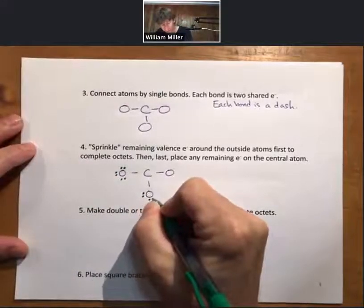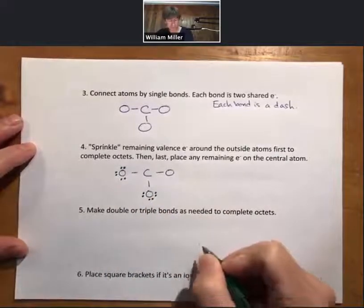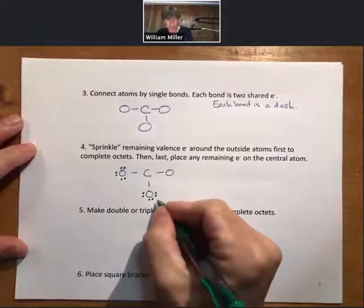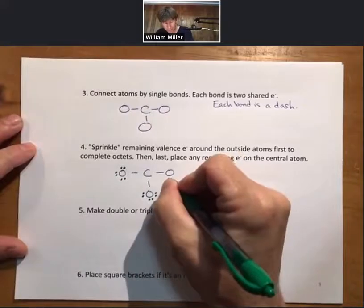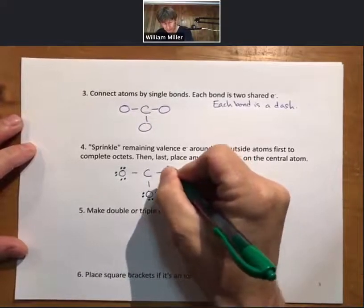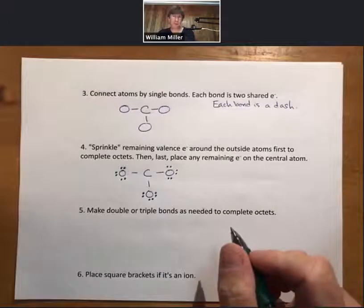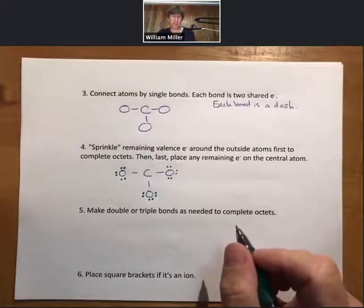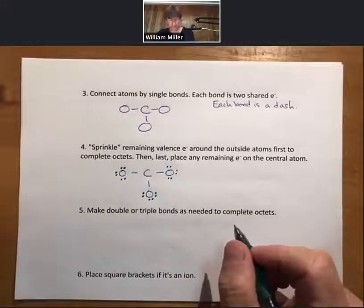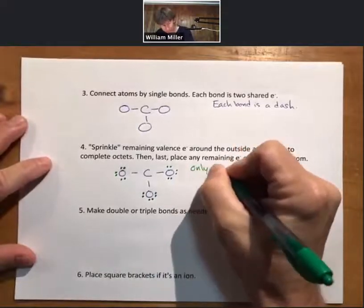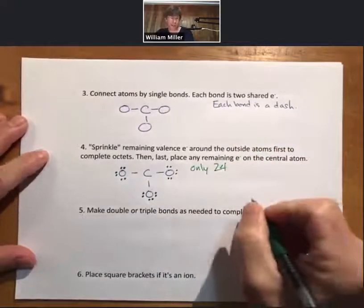Fourteen, sixteen, eighteen. Now we have an octet down for this oxygen. Twenty, twenty-two, twenty-four. And a key part of Lewis structures is you can only put the exact number of valence electrons in the compound. So we have only twenty-four valence electrons.